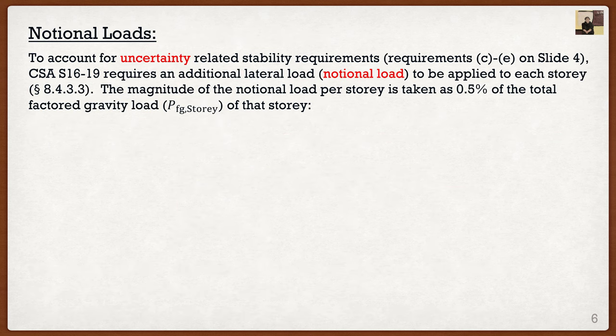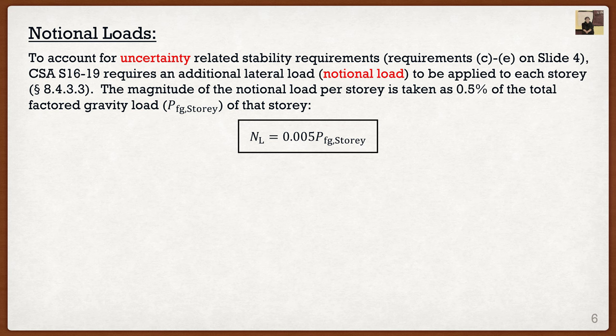So let's discuss notional loads. These account for the uncertainty related to our structure. Basically all we do is calculate an additional lateral load — called the notional load — and apply it to every story of our structure. The magnitude is given in clause 8.4.3.3 and it's taken as 0.5% of the total factored gravity load of that story. Describing it in formula form: NL = 0.005 × P_FG. Note that these are not official symbols from CSA — clause 8.4.3.3 is all words, not an equation — but this is a convenient way to remember it.